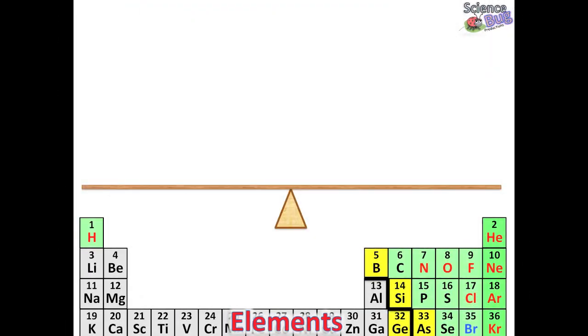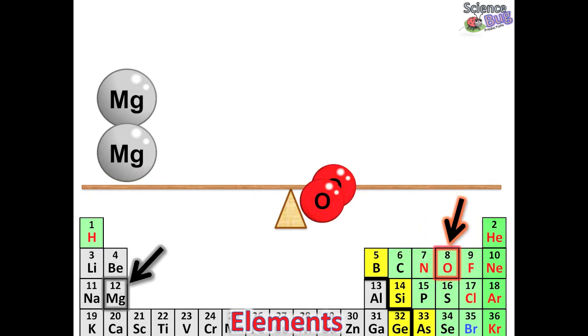So for our example today, we're going to be combining magnesium, which is a metal, and oxygen, a nonmetal.